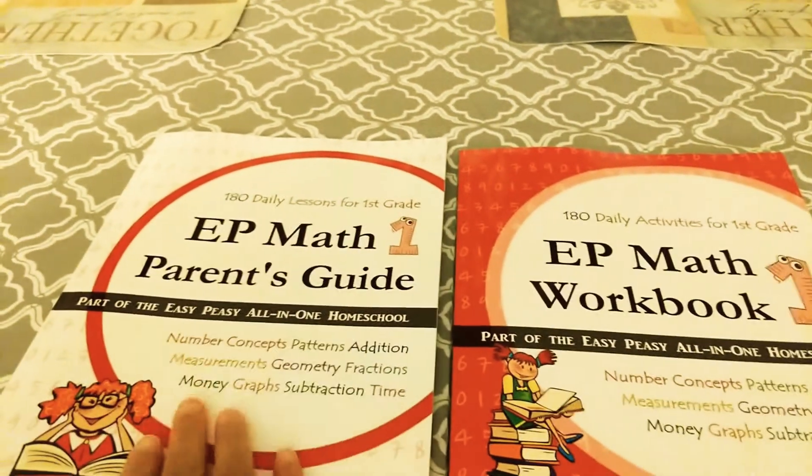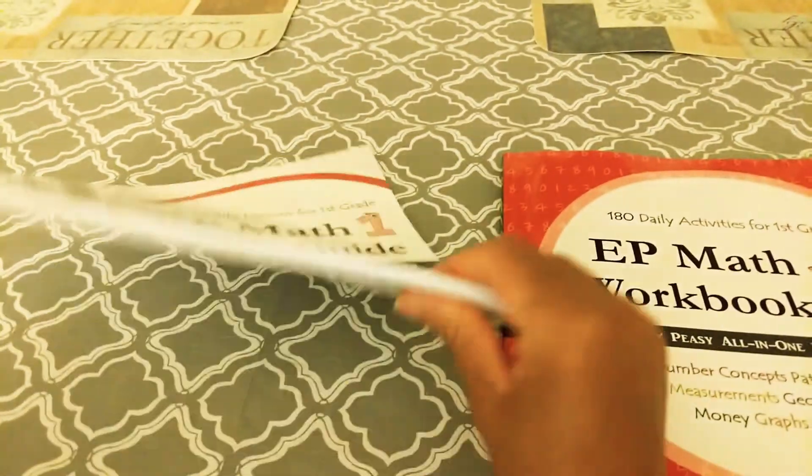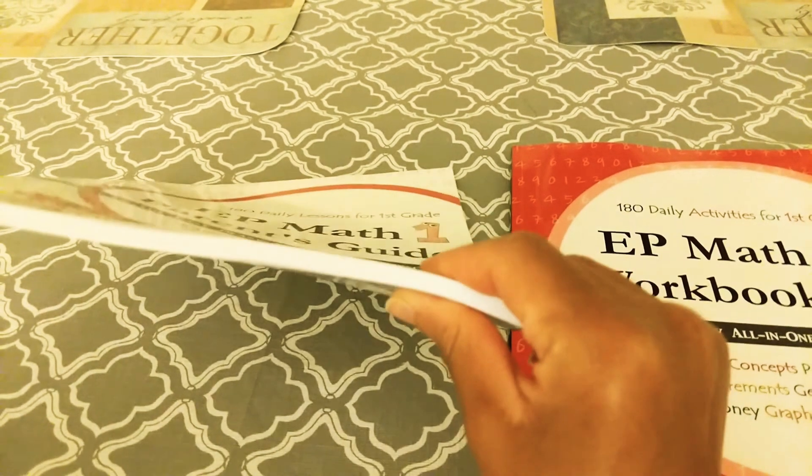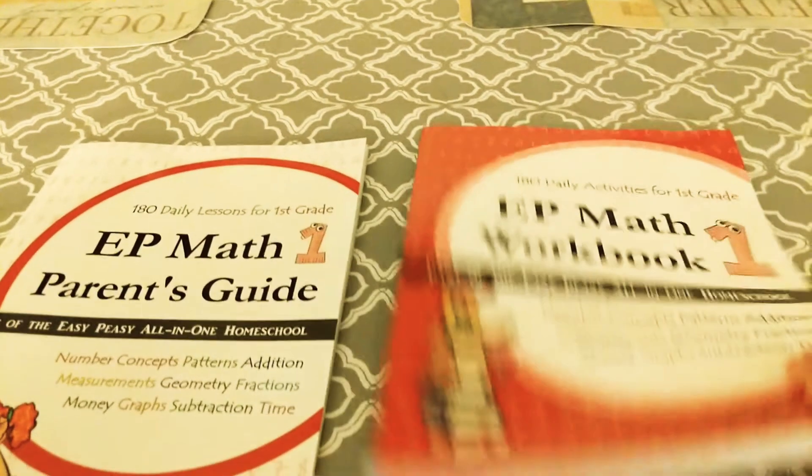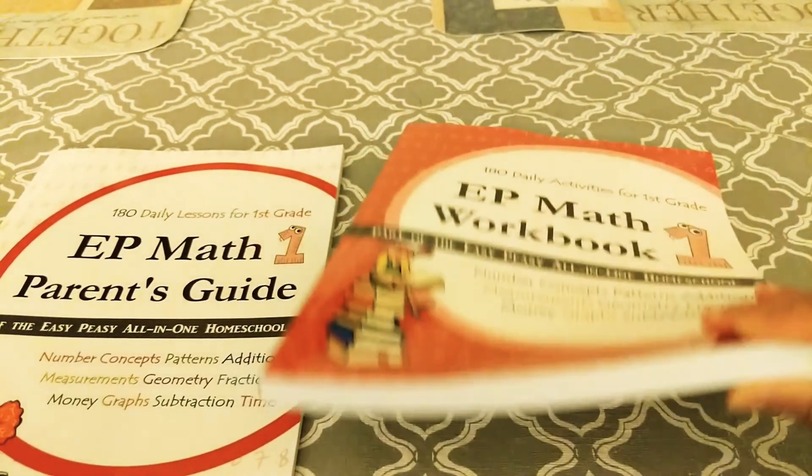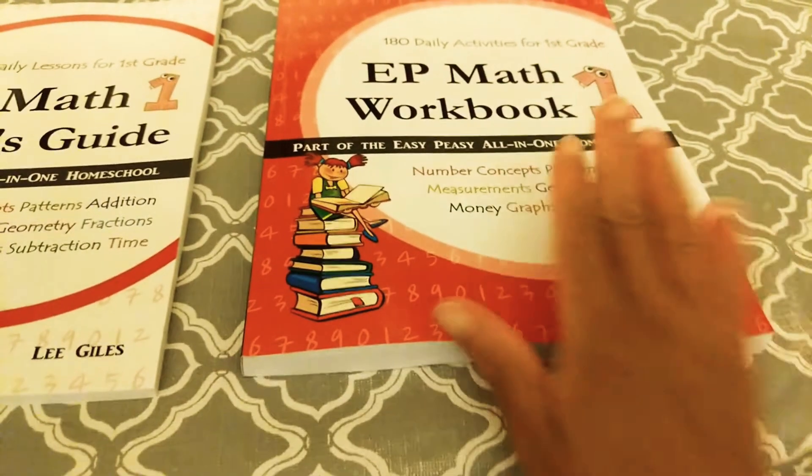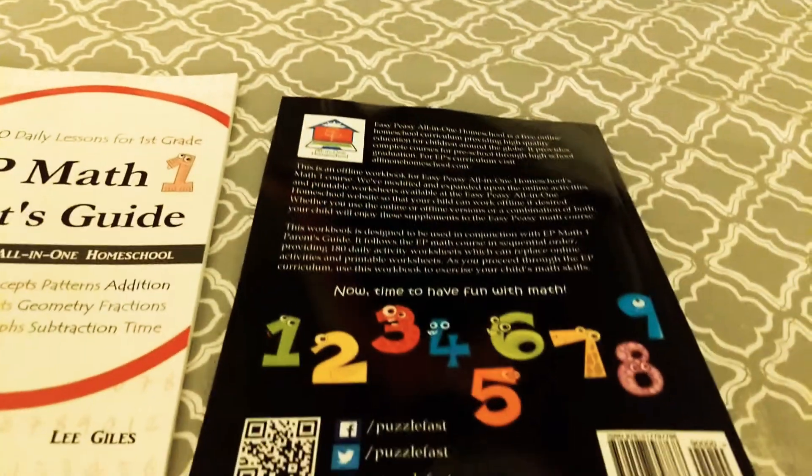So this is a parent's guide which is very thin. It's about a little over five dollars and this is the workbook for the child and this was about eight to nine dollars. Lee Giles is on this one but I guess Puzzle Fast Books did the workbook for her. It's the back of the workbook.